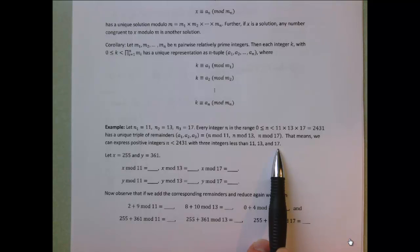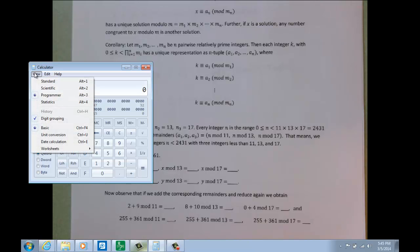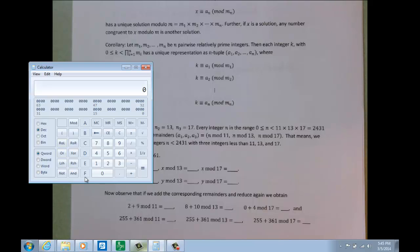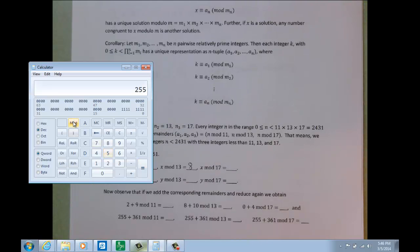Let's do an example and see what that looks like. Suppose we took 255 and wanted to represent that modulo 11, 13, and 17. You can do this with the calculator built into Windows in programmer mode. We'll take 255 modulo 11, that gives us 2. 255 modulo 13 gives us 8. And 255 modulo 17 is 0.